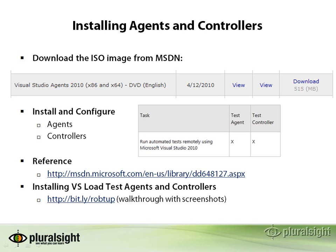Now, to install your agents and controllers, you need to get a separate ISO image from MSDN, or you might already have this media. Specifically, you need the Visual Studio Agents 2010 installation disk, and you can see it's shown here on this slide.